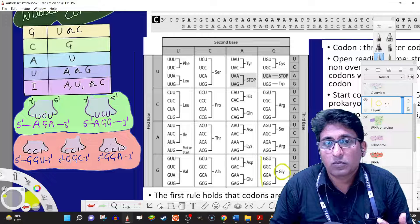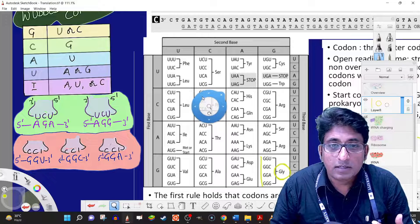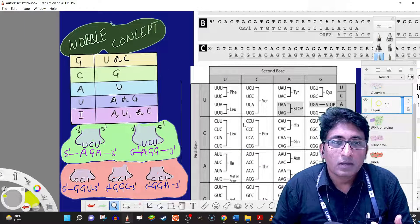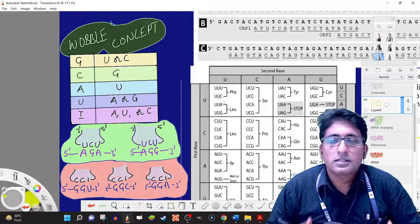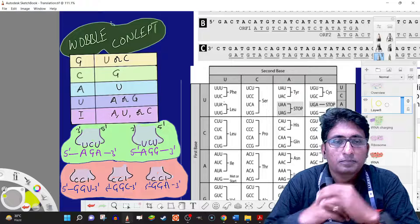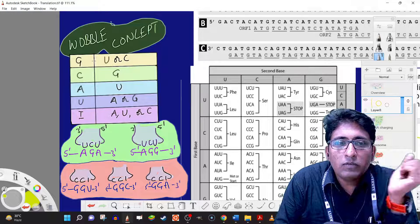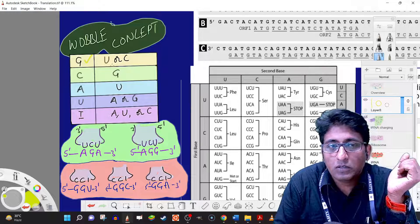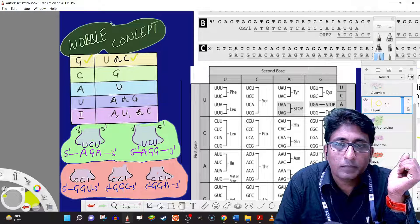The wobble concept is about base pairing between the codon and anticodon. Normally we would say that G would base pair only with C.